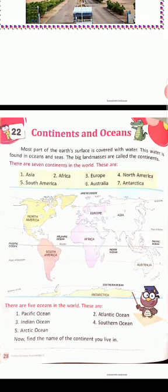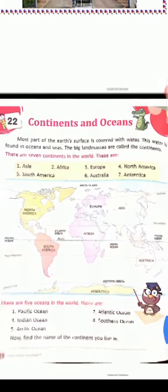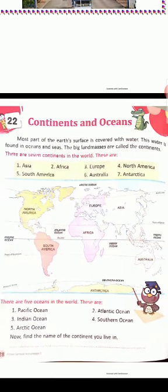The seven continents are: Asia, Africa, Europe, North America, South America, Australia, and Antarctica. First one — Asia. Second — Africa. Third — Europe. Fourth — North America.